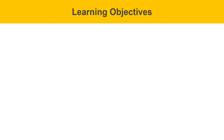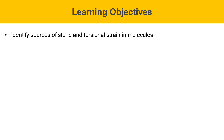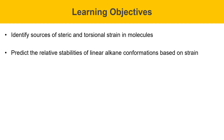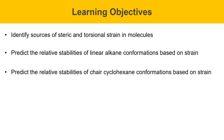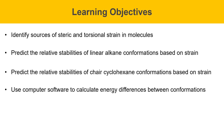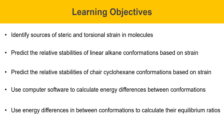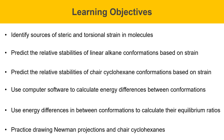Here are some learning objectives for this experiment. We will learn to identify sources of steric and torsional strain in molecules. You will be able to predict the relative stabilities of linear alkane conformations and chair cyclohexane conformations based on strain arguments. You'll use computer software to calculate energy differences between conformations and use those energy differences to calculate equilibrium ratios. And you'll get practice drawing Newman projections and chair cyclohexanes.